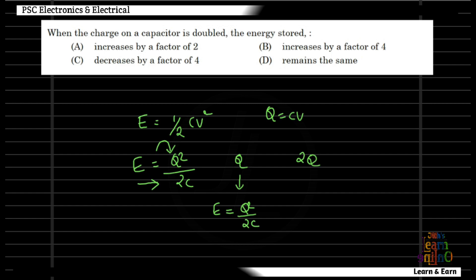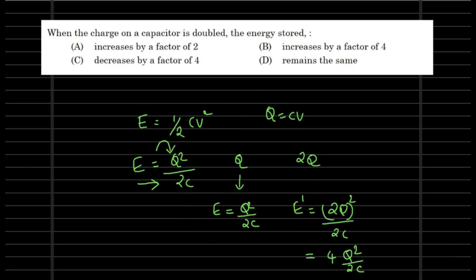Q is equal to Q²/2C. We apply this equation. Now E' is 4 times E. So we can say the energy stored in the capacitor is 4 times the original.